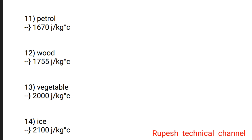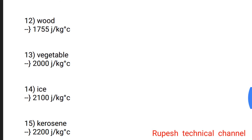Question number 13: Vegetable oil — 2000 joule per kg degree Celsius. Question number 14: Ice — 2100 joule per kg degree Celsius.